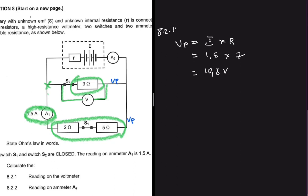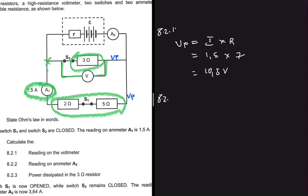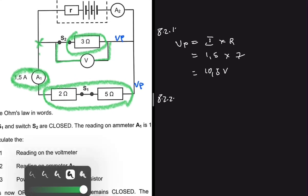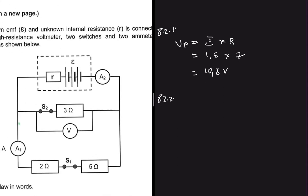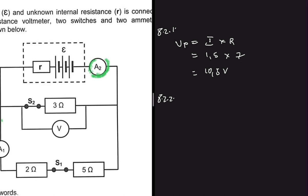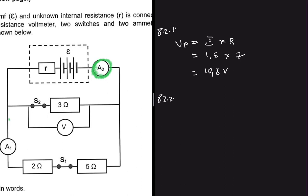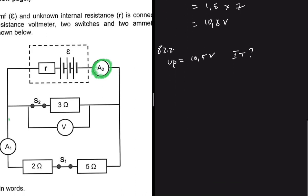Moving to 8.2.2, we're looking for the reading on ammeter A2. Looking at our sketch, ammeter A2 experiences the total current, so we're looking for IT. We have VP = 10.5V, and we have the formula VP = IT × RP. Since we have VP, we can find RP and then ultimately find IT.